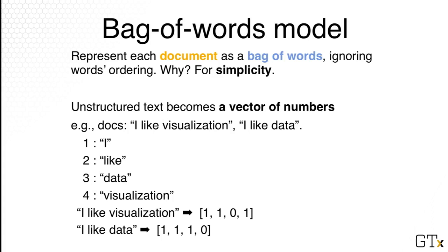A document consists of many sentences, which in turn consist of words. So how do we represent a document such that it can be easily processed by a computer or an algorithm? A typical approach is to use what we call the bag of words model. Imagine that we have a bag — like a big plastic bag — and every word we print it out and put it into this bag, then shake it all up. That means you are ignoring any ordering among the words, so you end up with a bag of words — very literally. The reason we do this is for simplicity, because now we only need to do some basic counting instead of worrying about the ordering.